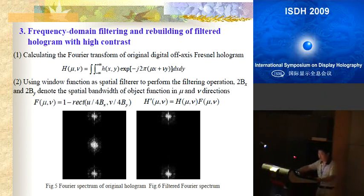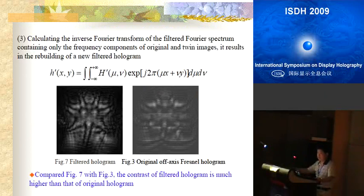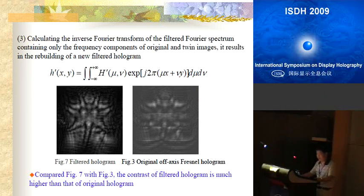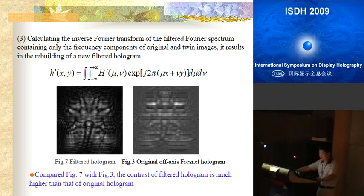The frequency components of the zero-order are successfully eliminated. The third step involves calculating the inverse Fourier transform of the filtered Fourier spectrum, which contains only the frequency components of the original and twin images, resulting in the rebuilding of a new filtered hologram. Figure 7 shows the filtered hologram; as a comparison, we also show the original Fourier hologram. We can see that the contrast of the filtered hologram is much higher than that of the original hologram.